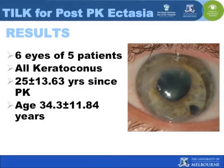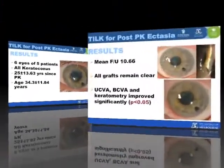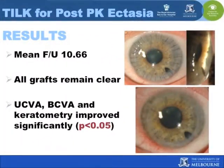Tuck-in lamellar keratoplasty was performed in 6 eyes of 5 patients with post-PK corneal ectasia. All of these cases were originally operated for keratoconus. At the end of 10 months, all grafts remained clear, and there was a significant improvement in uncorrected and best-corrected visual acuity.